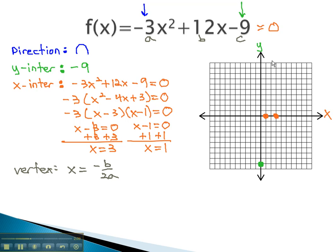Recalling from the quadratic formula where a, b, and c are, back to the original equation, b is going to be 12, giving us negative 12 over 2a, or negative 3. This is negative 12 over negative 6, which reduces to 2. 2 is the x value.